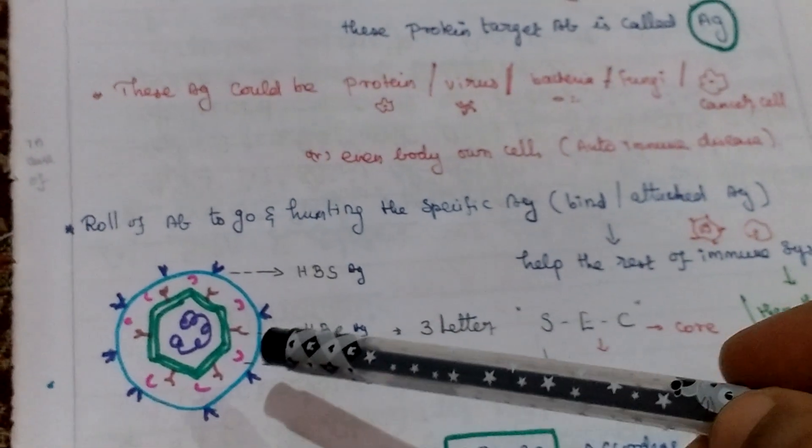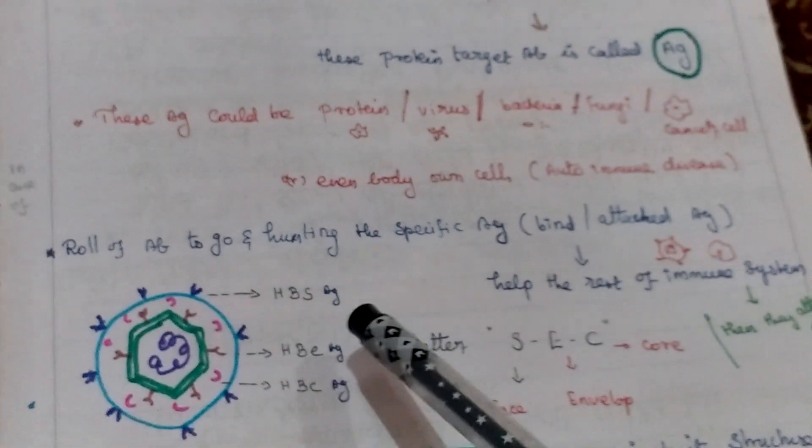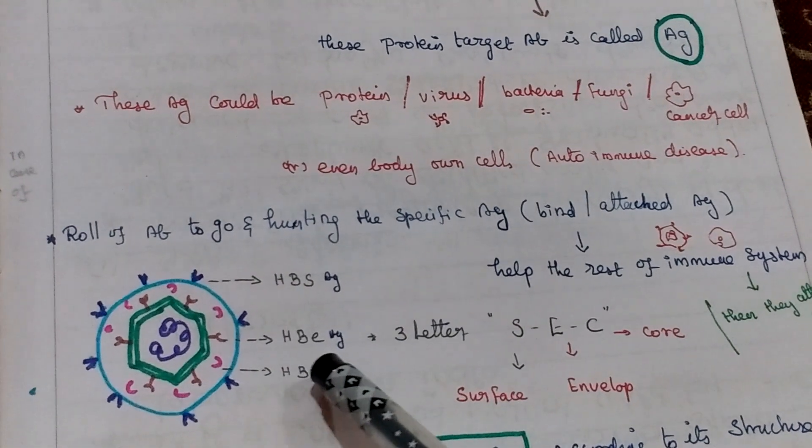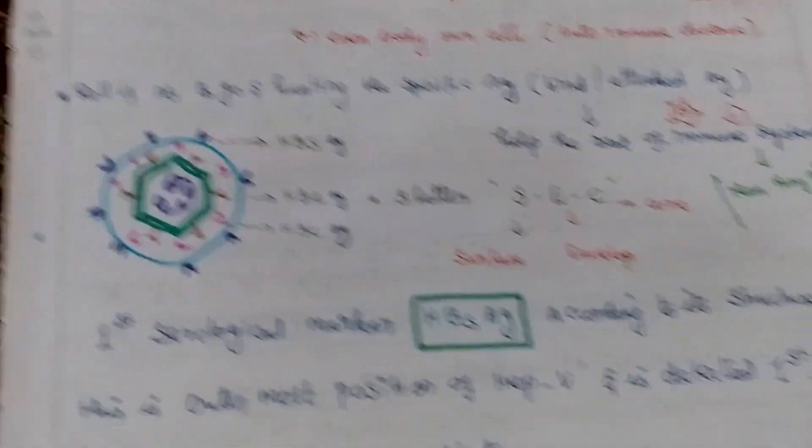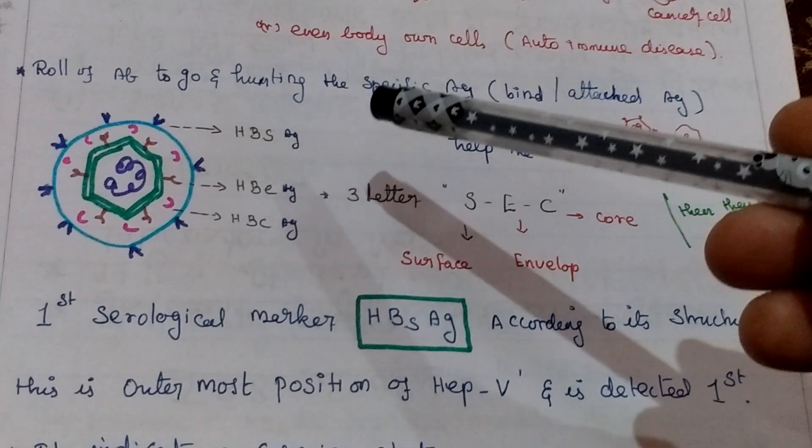Hepatitis B has three antigens: surface antigen, envelope antigen, and core antigen.